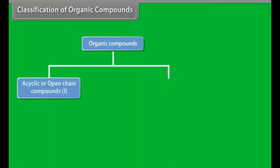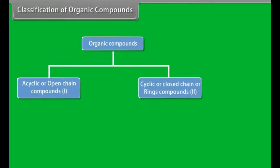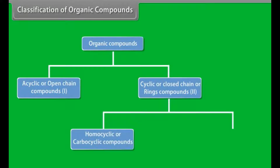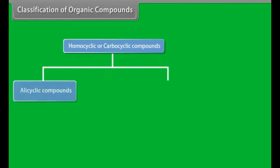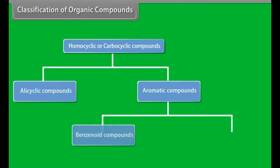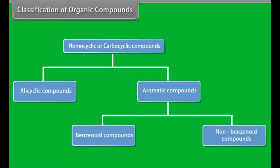Classification of organic compounds: organic compounds can be grouped into acyclic or open-chain compounds and cyclic or closed-chain or ring compounds. Cyclic compounds can be further divided into homocyclic or carbocyclic compounds and heterocyclic compounds. Homocyclic can be further divided into alicyclic and aromatic compounds. Aromatic compounds can be further divided into benzenoid and non-benzenoid compounds.